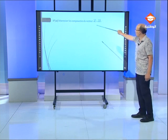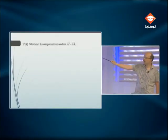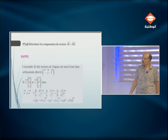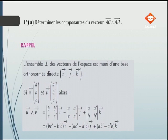Question 1 : déterminer les composantes du produit vectoriel AC ∧ AH. Rappel : si U a les composantes (a, b, c) et V les composantes (a', b', c'), alors U ∧ V = (bc' - cb')i - (ac' - ca')j + (ab' - ba')k. Dans le cube, AC = AB + AD = 6i + 6j, donc les composantes de AC sont (6, 6, 0). Et AH = AD + AE = 6j + 6k, donc les composantes de AH sont (0, 6, 6).